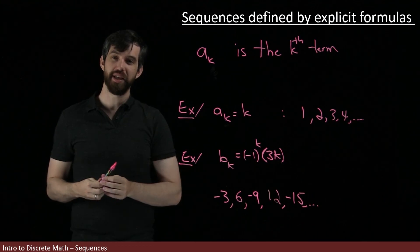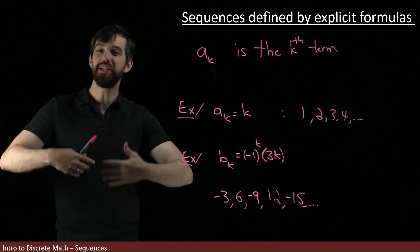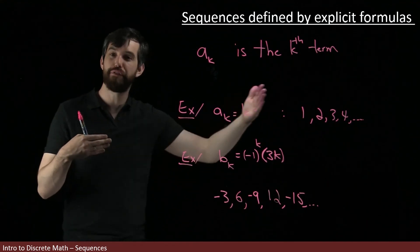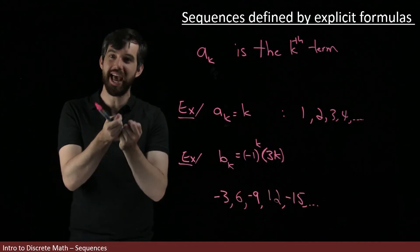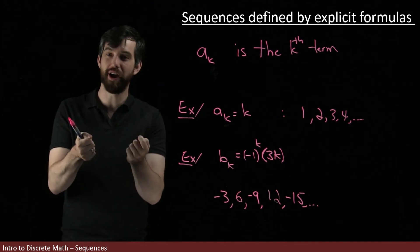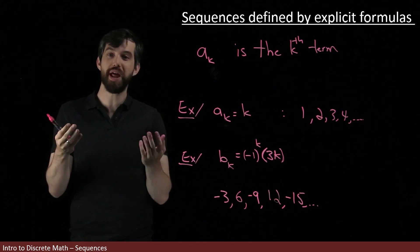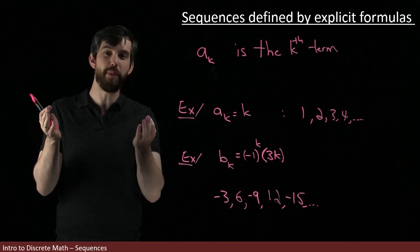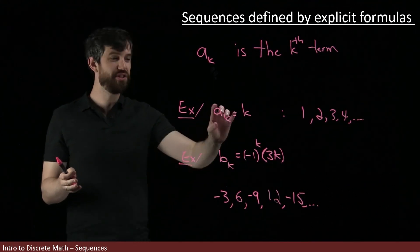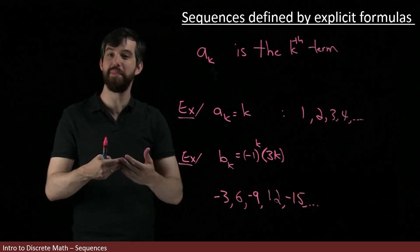For instance, consider the sequence which is all of the different decimals of pi. Pi is an irrational number. It goes on forever and it never repeats. There's no nice, simple formula to tell you what the seventh decimal place of pi. So we don't have this sort of clean way with a nice, cute little formula to be able to describe every sequence, but a lot of sequences can be described this way.